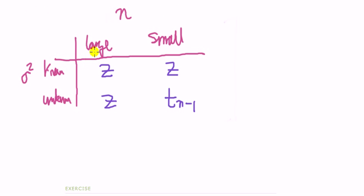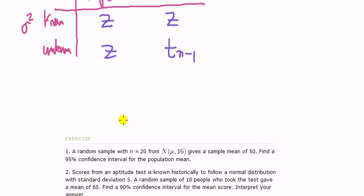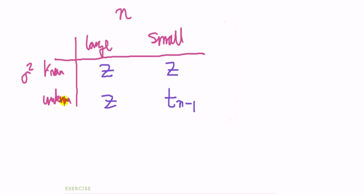Okay, so we have population variance unknown here. So, what is n? Is that large or small? We've got 14 students. Well, 14 is way less than 30. So, we have sigma square is unknown, and sample size is small. So, we use t. With n minus 1 degree of freedom. Since n is 14, the degree of freedom will be 13. Done.